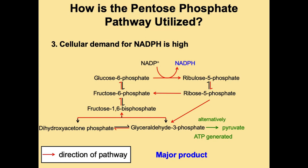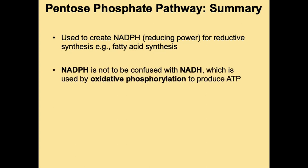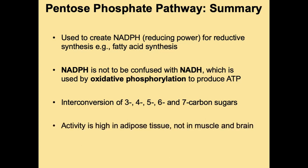If ATP is also required, remember that glyceraldehyde 3-phosphate is an intermediate in glycolysis. This molecule can enter glycolysis and produce pyruvate, which then enters the citric acid cycle to produce ATP. In summary, the pentose phosphate pathway is important for generating reducing power — NADPH — required for fatty acid synthesis. NADPH should not be confused with NADH, which is used by oxidative phosphorylation to produce ATP. The pathway is active in fat tissue but less so in muscle or brain, though it does occur there.